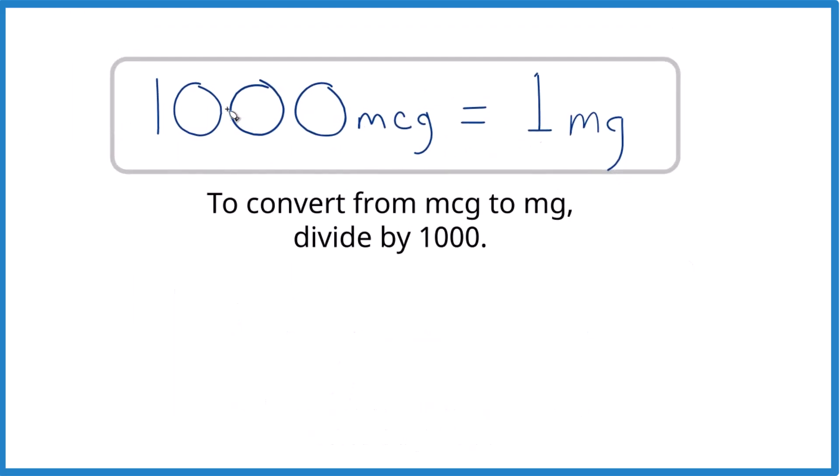So the key to doing this, 1000 MCG, 1000 micrograms, is 1 milligram. And if we want to convert from micrograms to milligrams, we divide by 1000.